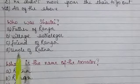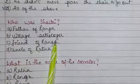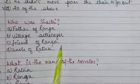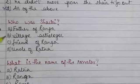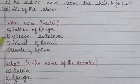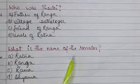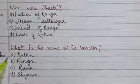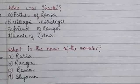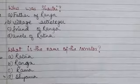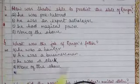Who was Sastri? Option A: Father of Ranga, Option B: Village astrologer, Option C: Friend of Ranga, Option D: Uncle of Ratna. Option B is correct — he was the village astrologer. Next question: What is the name of the narrator? Options are Ratna, Ranga, Rama, and Shyama. The answer is Shyama — that is the narrator's name.